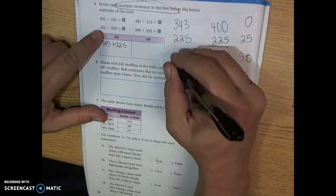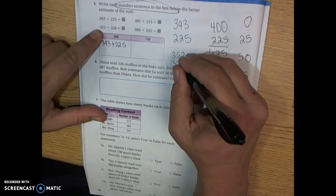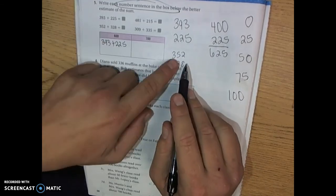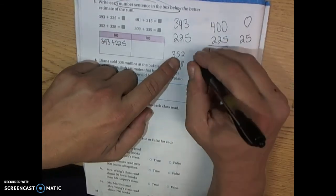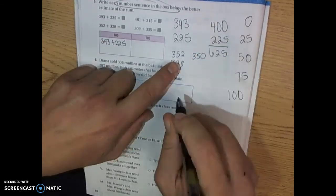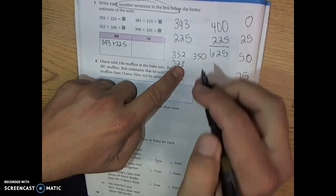What about this one? 352. 328. 52 is closer to 50. 28 is closer to 25.